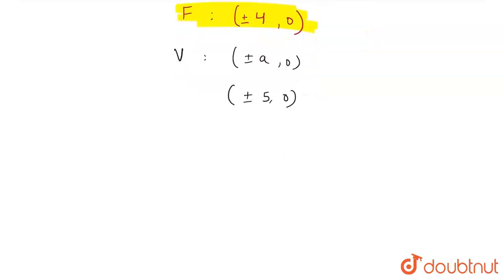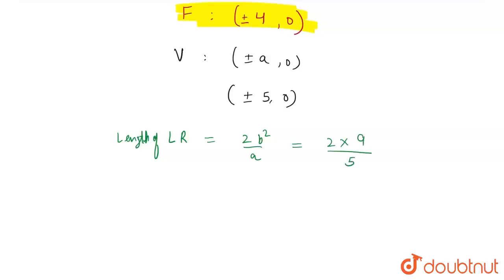The question also asks for the length of the latus rectum. The length of the latus rectum = 2b²/a, where b² = 9 and a = 5. Therefore, the length of the latus rectum = 18/5.